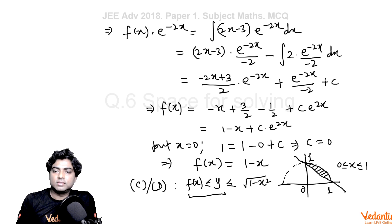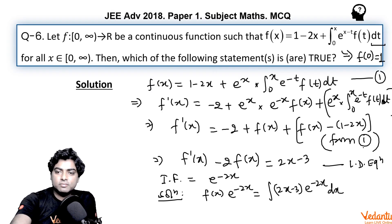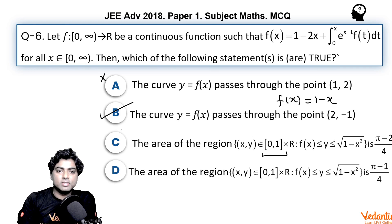So area obviously here would be quarter circle means 1/4 times π r^2, radius is 1, minus area of the triangle, half times base times height. So finally we will get it as (π - 2)/4 square units. So the option (π - 2)/4 is given in option C, option C is correct, D is not correct.